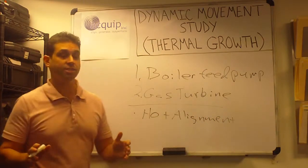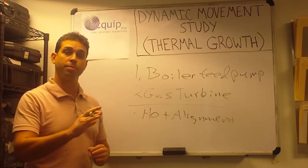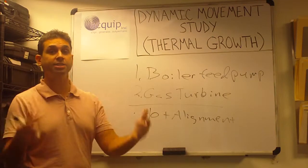What a hot alignment check is, is we'll shut the machine down, put all of our alignment equipment on as quickly as possible after we lock out and tag out the machine, and take a set of readings.